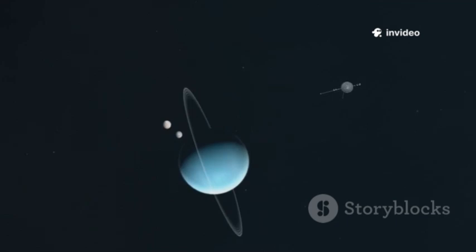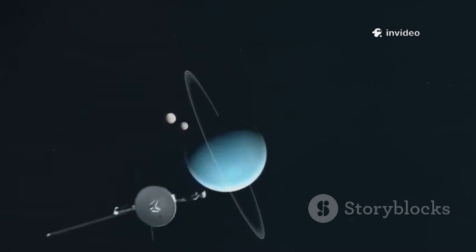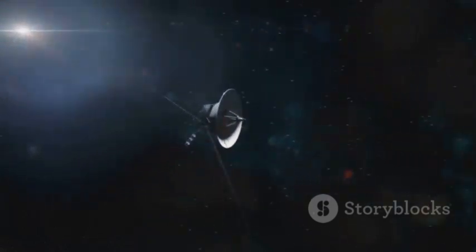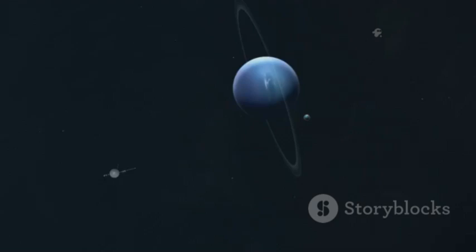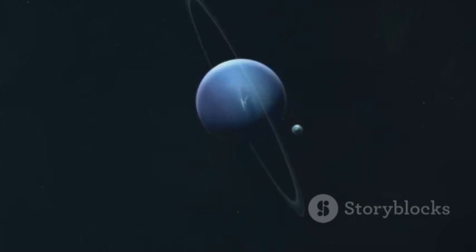Voyager 2 wasn't just a machine, it was a symbol of human curiosity asking, what's out there? Its mission was to take advantage of a rare planetary alignment, visiting Jupiter, Saturn, Uranus, and Neptune in a single journey. Like cosmic billiards, it used each planet's gravity to slingshot to the next, a grand tour only possible once every 176 years.